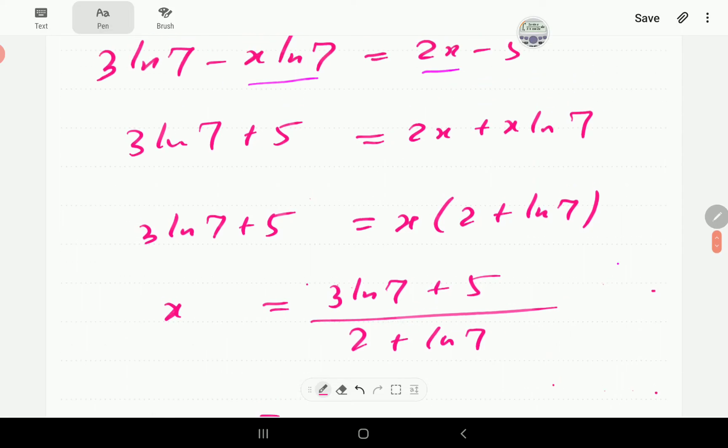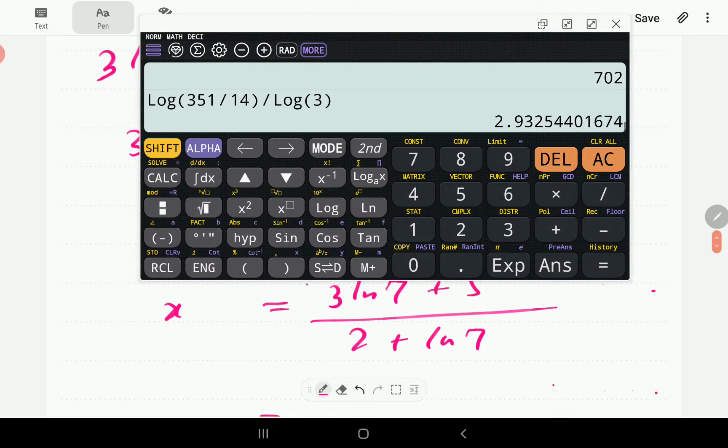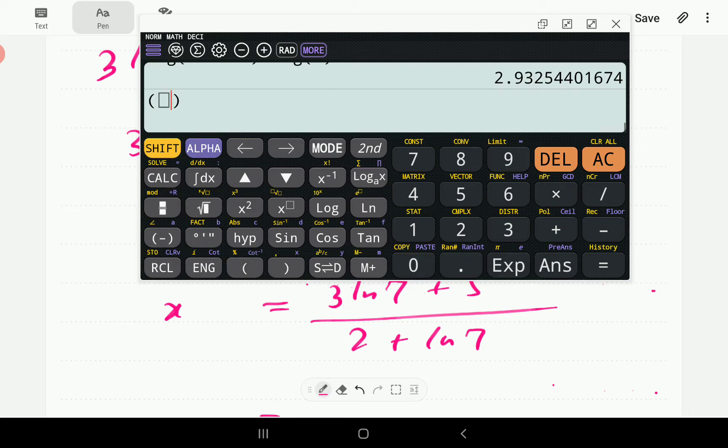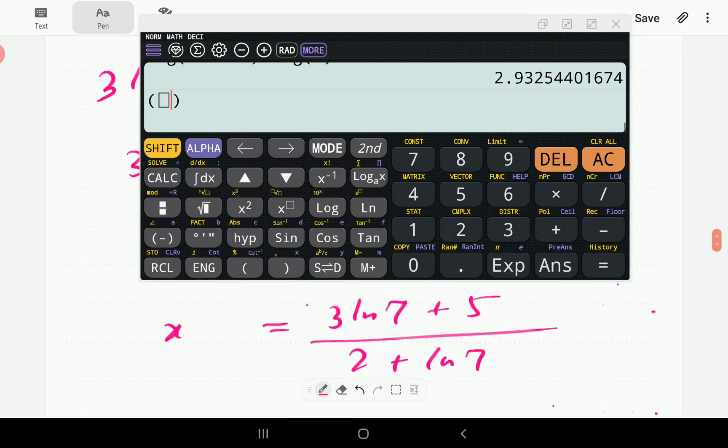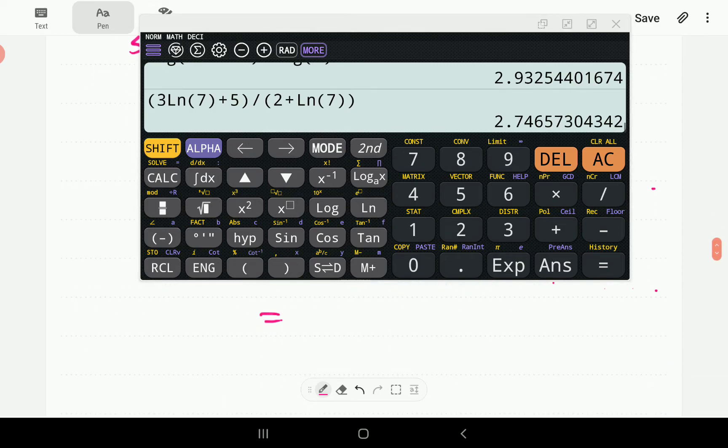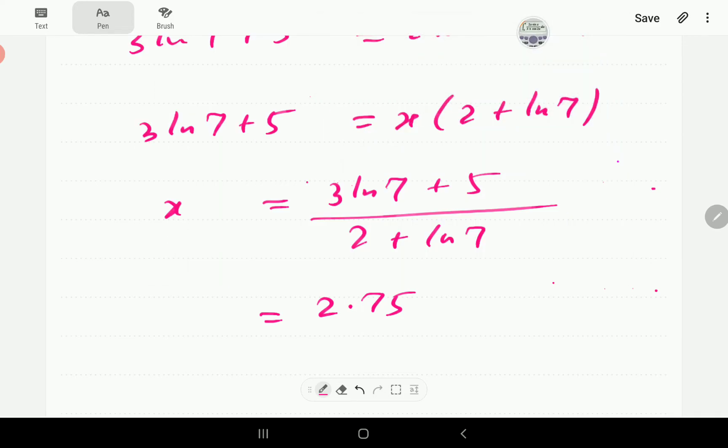And then of course, we can punch this in the calculator. So we're going to have, open brackets, 3 ln 7 plus 5. Then this is all divided by, so again open brackets, 2 plus ln 7. And this gives us 2.75. So 2.75 there. All right.